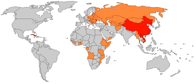There are multiple components to an economic system. Decision-making structures of an economy determine the use of economic inputs — the factors of production — distribution of output, the level of centralization in decision-making and who makes these decisions. Decisions might be carried out by industrial councils, by a government agency, or by private owners. An economic system is a system of production, resource allocation, exchange and distribution of goods and services in a society or a given geographic area.